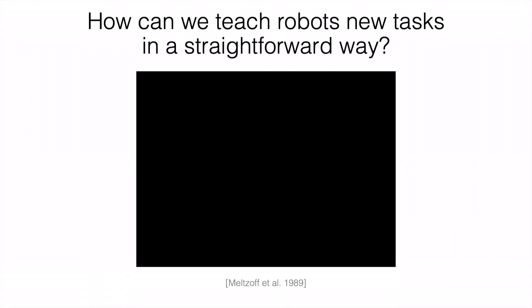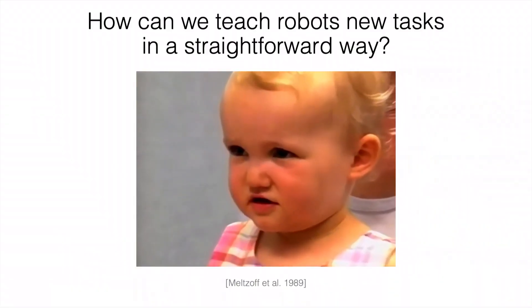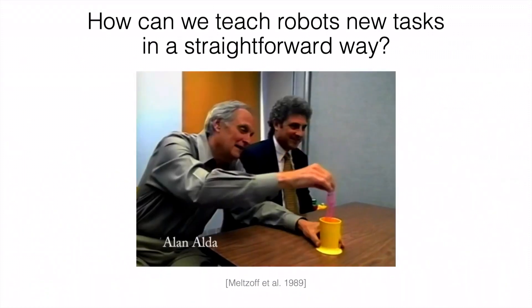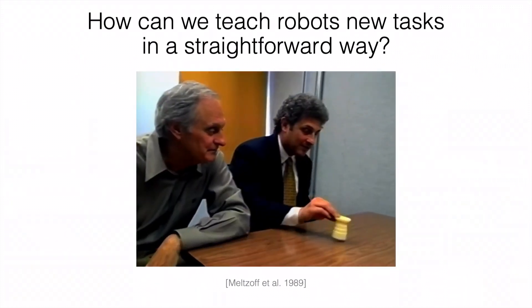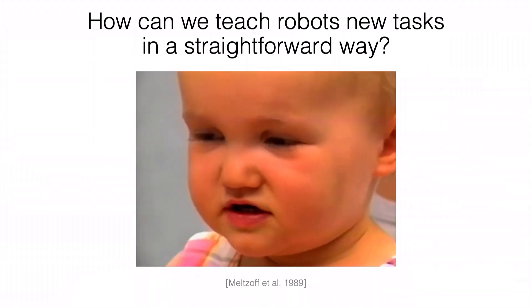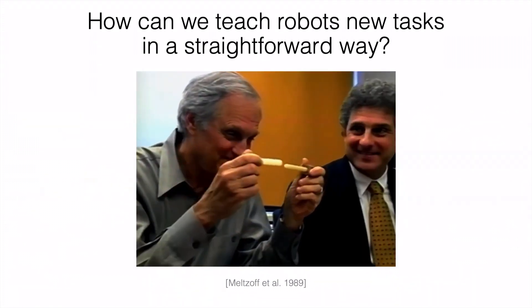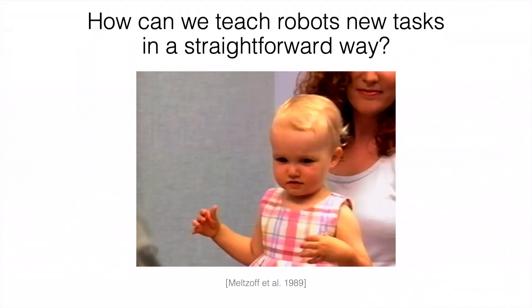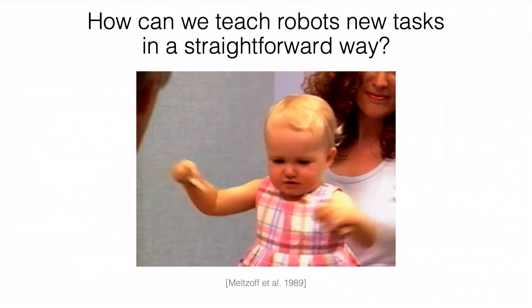So how should we teach robots new manipulation skills in the easiest and most intuitive way? We seek inspiration from how humans learn from childhood, as the underlying learning mechanisms reveal the most intuitive way of learning. Let's look at this video from a cognitive science study where adults were teaching a baby new manipulation skills. This young baby, who hadn't yet developed language understanding, watched how the adults performed the task and could almost correctly imitate it. It comes so naturally that the demonstration only needs to happen once. She can imitate many tasks — not only single-hand manipulation, but also object interactions that are not natural to her.